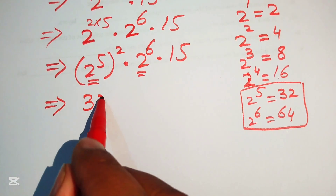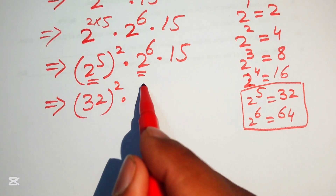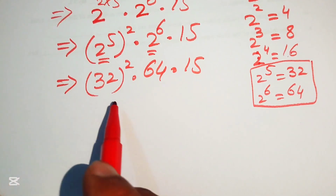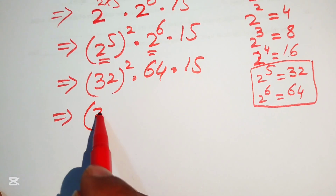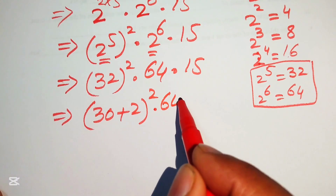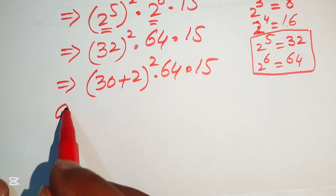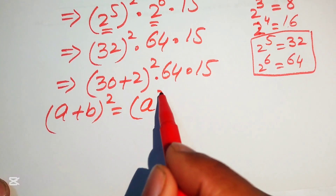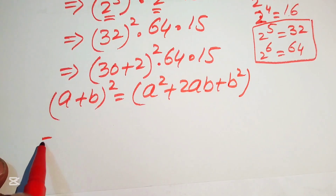We replace 2 to the power of 5 with 32 squared, and 2 to the power of 6 with 64, multiplied by 15. To take the square of 32, we break 32 as 30 plus 2, giving (30 + 2) whole squared, multiplied by 64, multiplied by 15. We use the algebraic formula: (a + b)^2 = a^2 + 2ab + b^2.